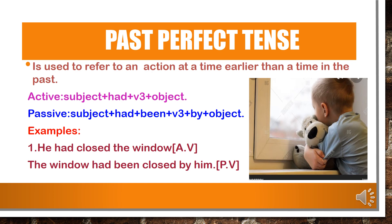Past perfect tense is used to refer to an action at a time earlier than a time in the past. In active voice: subject plus had plus V3 plus object. In passive voice: subject plus had plus 'been' plus V3 plus 'by' plus object. For all subjects, use 'had'. Example: 'He had closed the window' becomes 'The window had been closed by him.' 'He' changes to 'him' as the object.